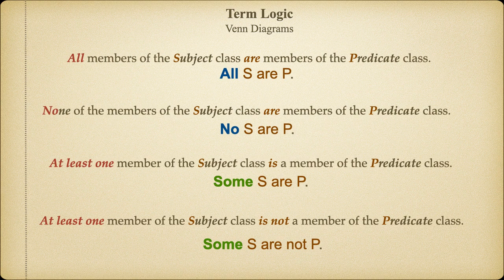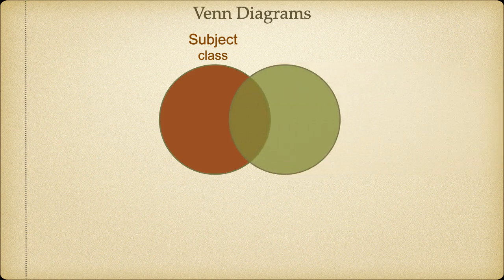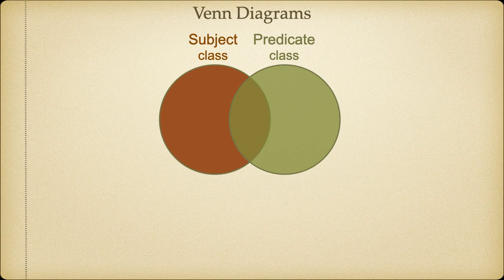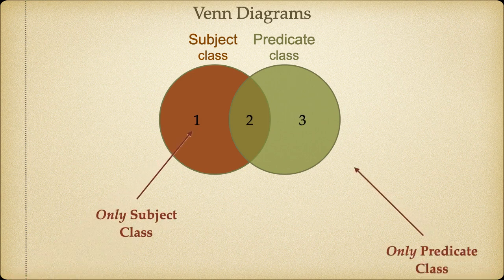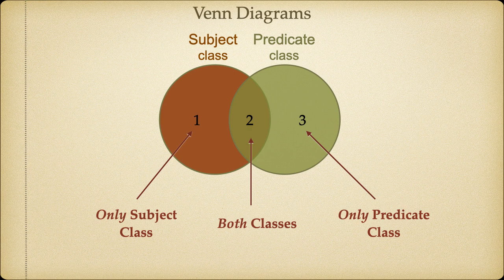Next, we're going to learn about Venn diagrams, which allow us to visualize the logic of categorical propositions. We begin with two overlapping circles, representing the subject and predicate classes of any categorical proposition. The circle representing the subject is always on the left, and the one representing the predicate is always on the right. Note that when we overlap the circles, we create a new set, represented in Region 2, as the set of things that are members of both the subject and predicate classes.